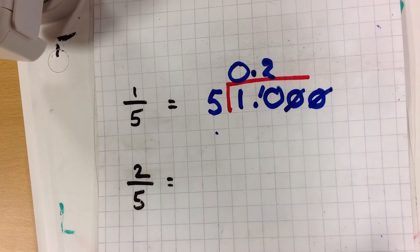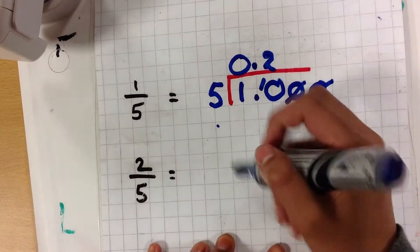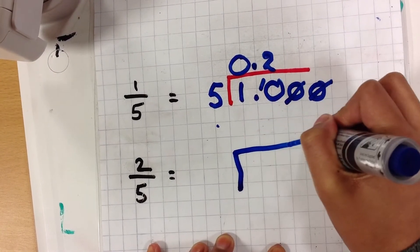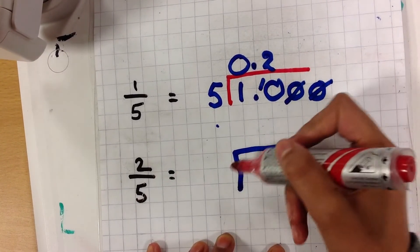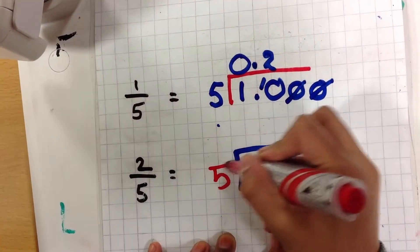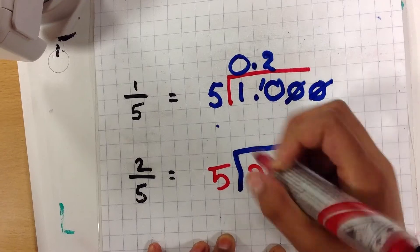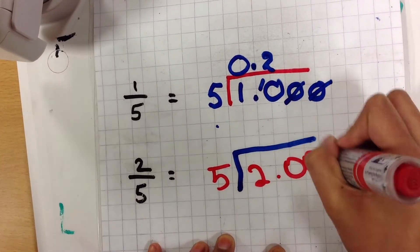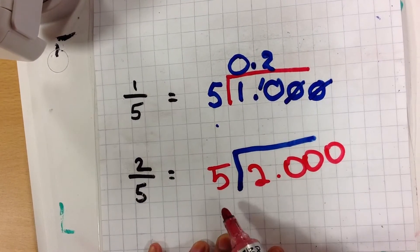2 over 5. We have to do the bus stop method again. There will be 5 and 2 there, and 3 zeros. How many fives go into 2?